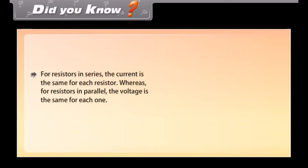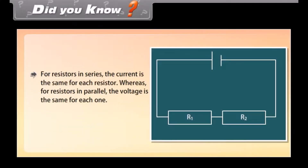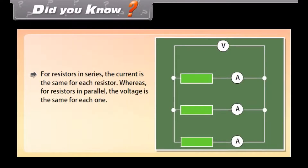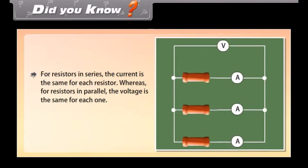Did you know? For resistors in series, the current is the same for each resistor, whereas for resistors in parallel, the voltage is the same for each one.